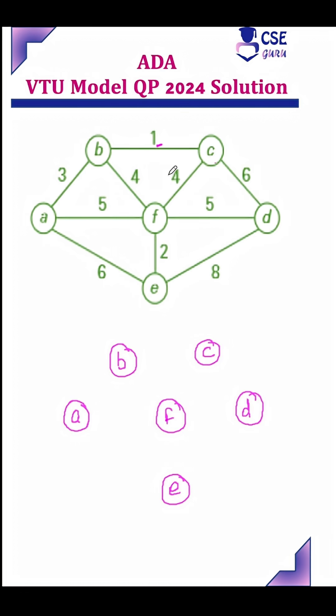BC is the edge with least weight. Check whether the inclusion of the edge will form a cycle. No, it won't form a cycle. Include this edge. Next least cost edge is EF. Inclusion of this edge does not form a cycle. Next least cost edge is AB. Inclusion of this edge does not form a cycle.